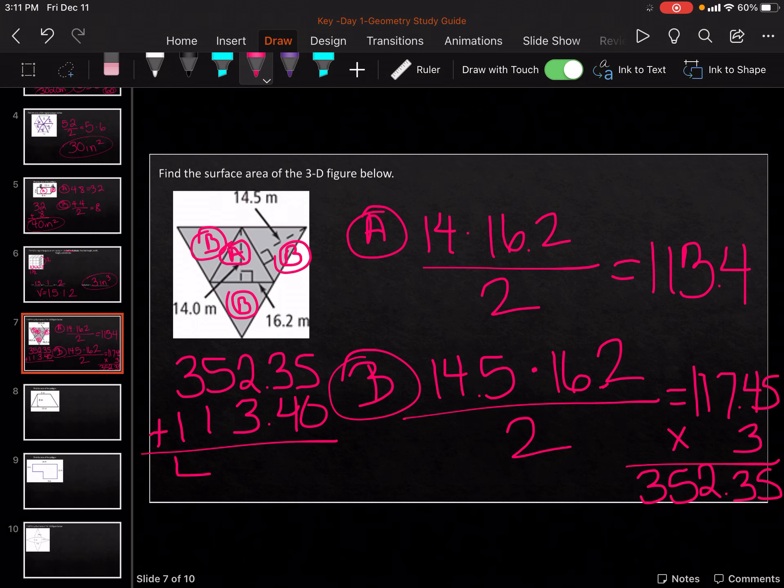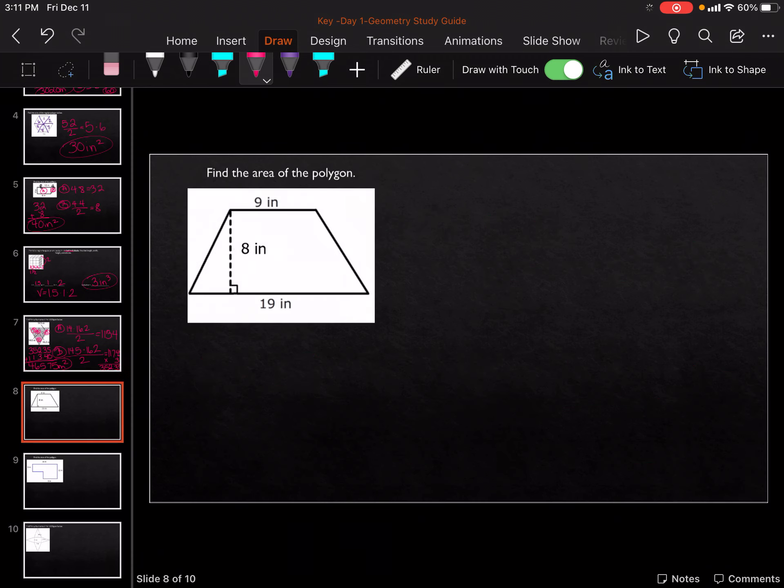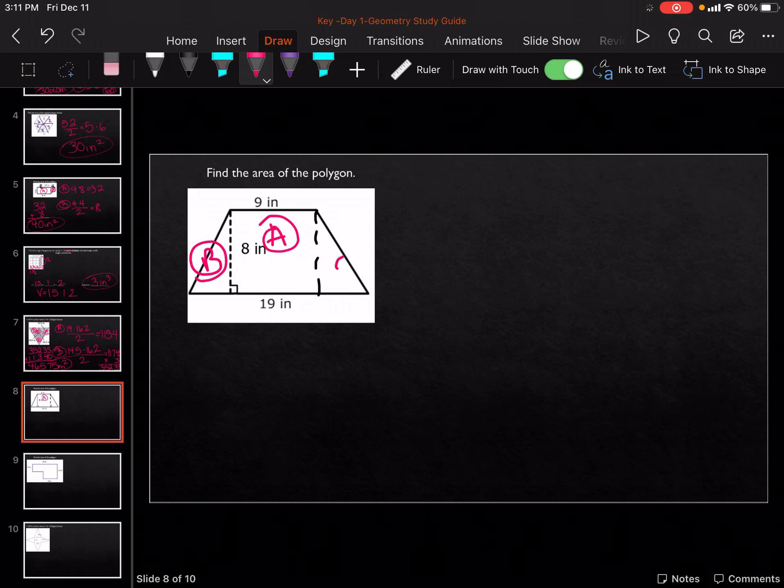So for this one, we need to cut the triangle off on the end as well. And we're going to have A, B, and C. And if you put the triangles together, that's fine. So for A, it's going to be 9 times 8, which gets me 72.